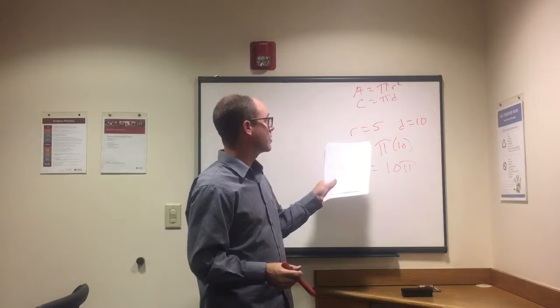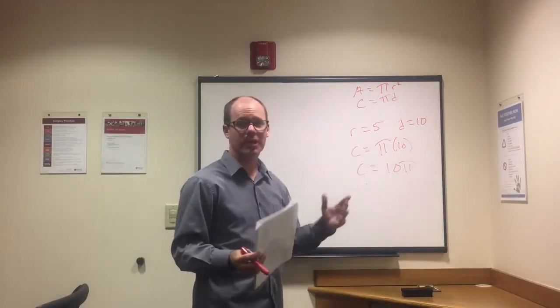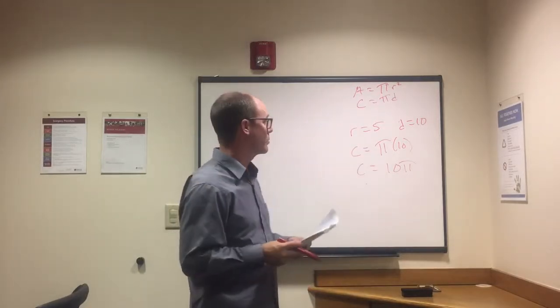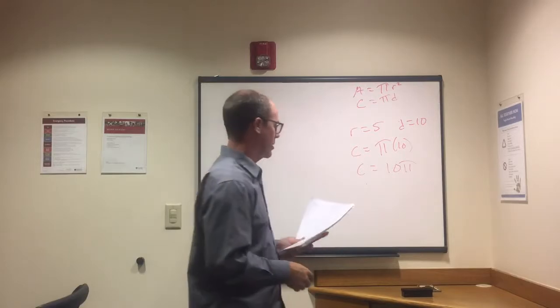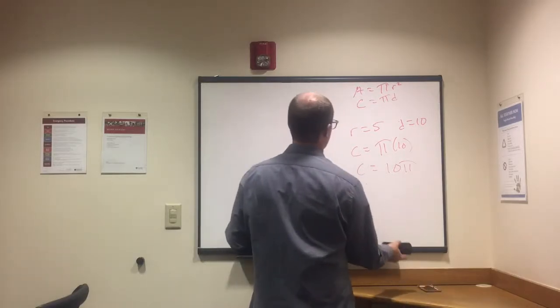That will happen often though, right? They'll give you diameter and you need to find radius, or backwards - they give you radius, you need to find diameter. So diameter is twice radius.